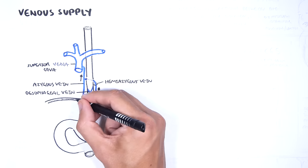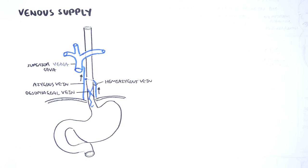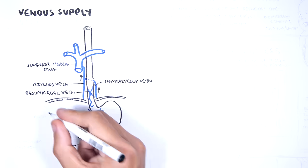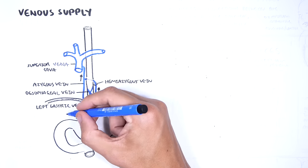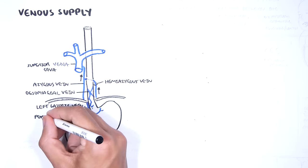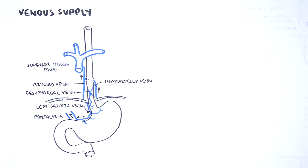I have not drawn the heart, but imagine it is sitting on the diaphragm in the middle. The esophageal vein also anastomoses with the left gastric vein originating below the diaphragm. The left gastric vein drains into the portal vein. The portal vein drains into the liver.